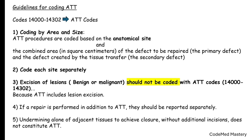This guideline is also given in your CPT manual under adjacent tissue transfer, page 98 — you can highlight it. The fourth guideline is that if a repair is performed in addition to ATT, they should be reported separately. The fifth guideline is that undermining alone of adjacent tissue to achieve closure without additional incision does not constitute ATT. Undermining refers to freeing the skin from underlying tissues to allow for tension-free closure.